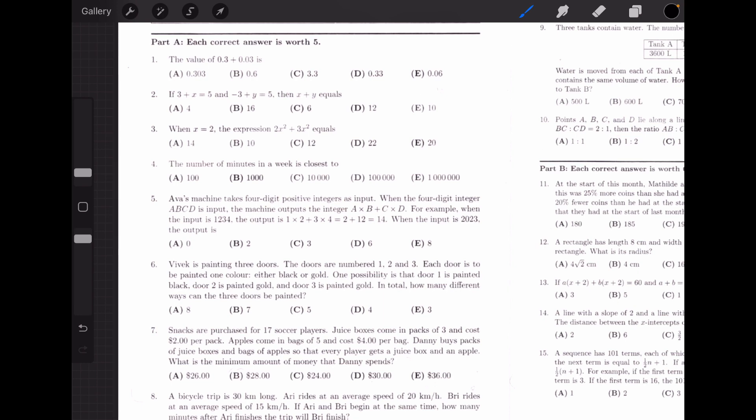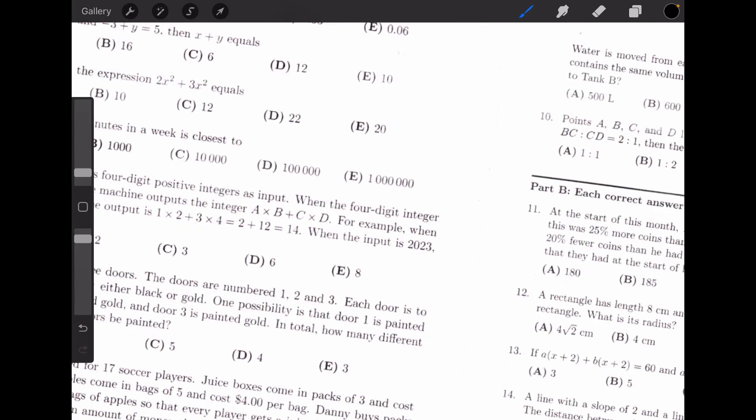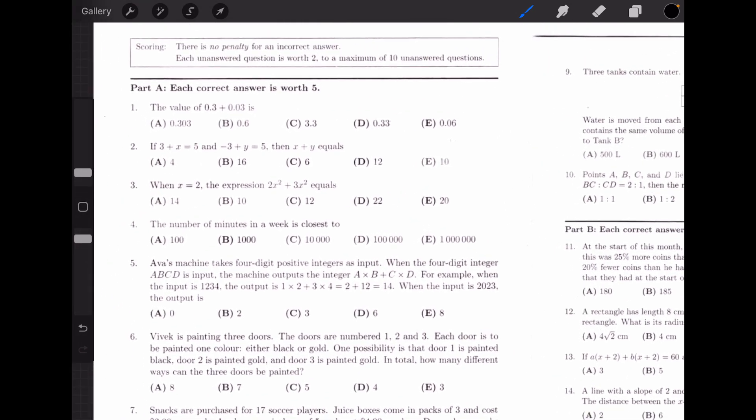Let's start with Part 1, and each question in Part 1 was 5%. Number 1, the value of 0.3 plus 0.03 is, it should be D, 0.33.